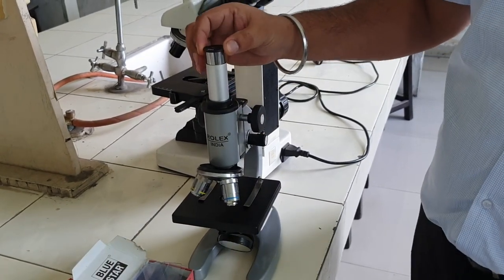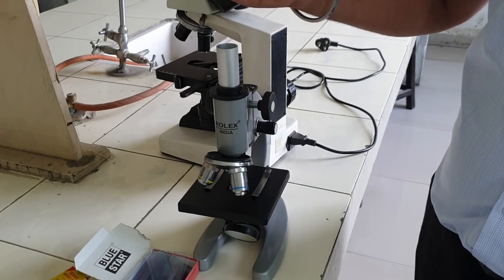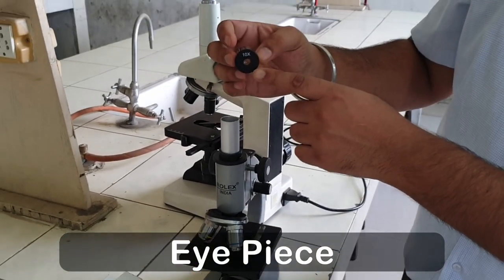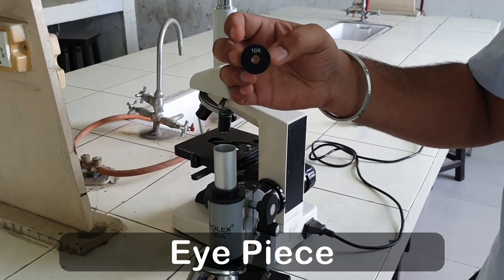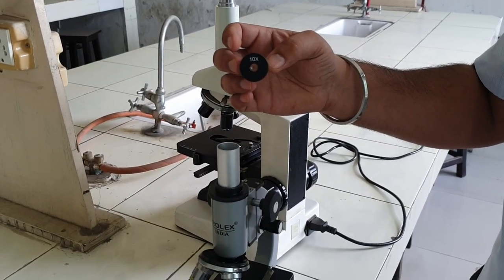The first part is the eyepiece. This is the eyepiece lens. We can see the magnification written on this. It is about 10x. This means that it can increase 10 times.